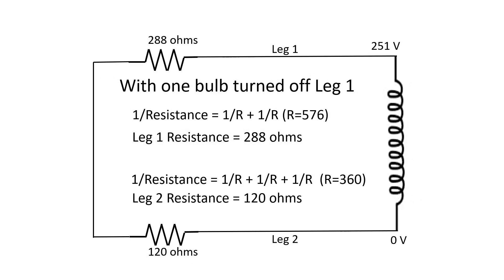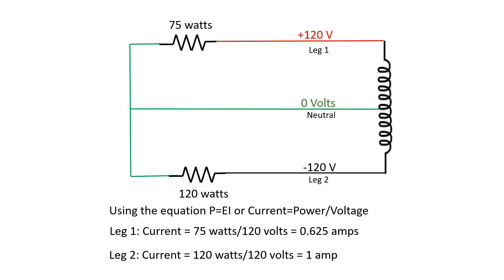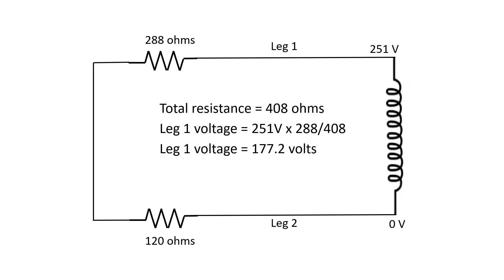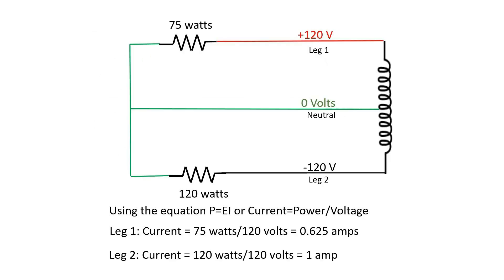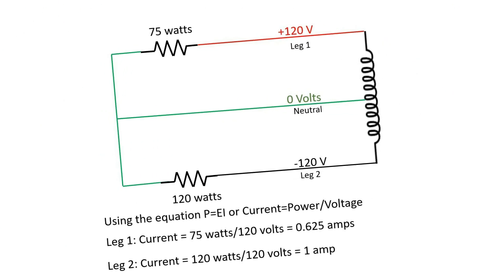I'll work through some calculations using wattage, current, voltage, and resistance to calculate exactly how much voltage you'll have on each leg of an electrical system in the case of a lost neutral. If you know the power consumption of any device, you can use Ohm's Law to calculate exactly how much voltage and resistance that device consumes, and you'll be able to calculate the voltages on each leg.